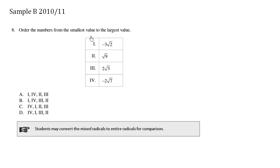Order the numbers from the smallest value to the largest value. The key here is to convert the mixed radicals to entire radicals so that we can compare these properly, especially if we don't have a calculator. If we had a calculator, we could simply convert all of these to decimal places. But let's try this without a calculator.